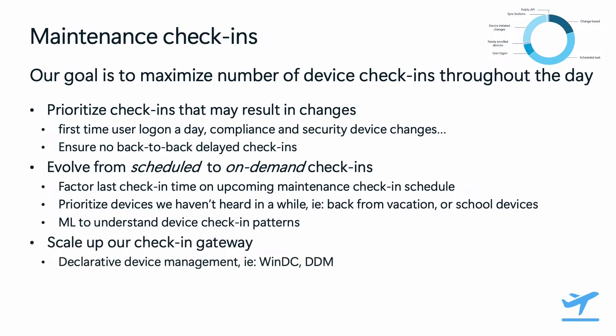Third is continuing to optimize our check-in gateway scale, improving the efficiency of our check-in processes so we can process more check-ins at once. An example of that is Declarative Device Management.